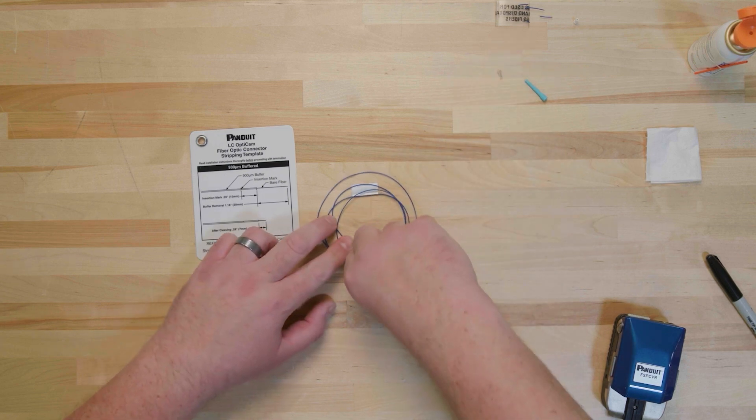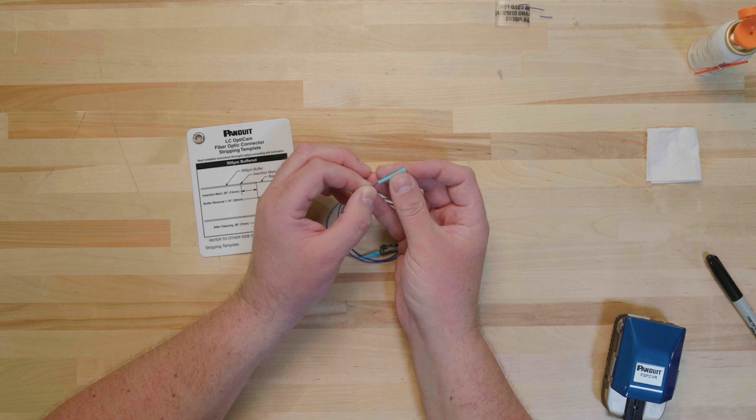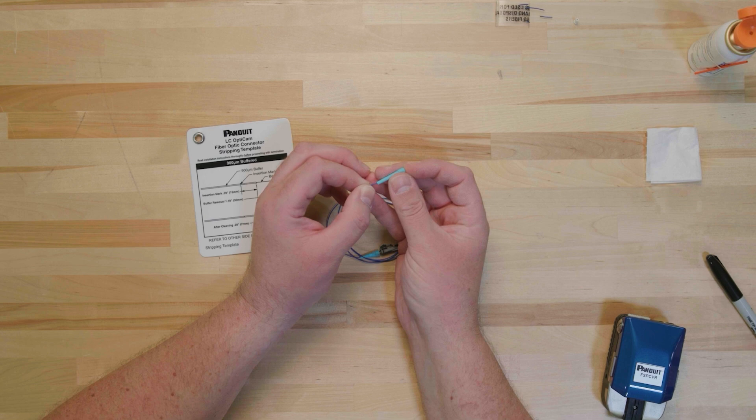Begin by inserting the fiber cable into the narrow end of the boot. Slide the boot back along the cable to keep it out of the way for now. The boot prevents the bend radius of the fiber cable from being exceeded. The boot must be installed first. You will not be able to slide the boot on once the connector is installed.